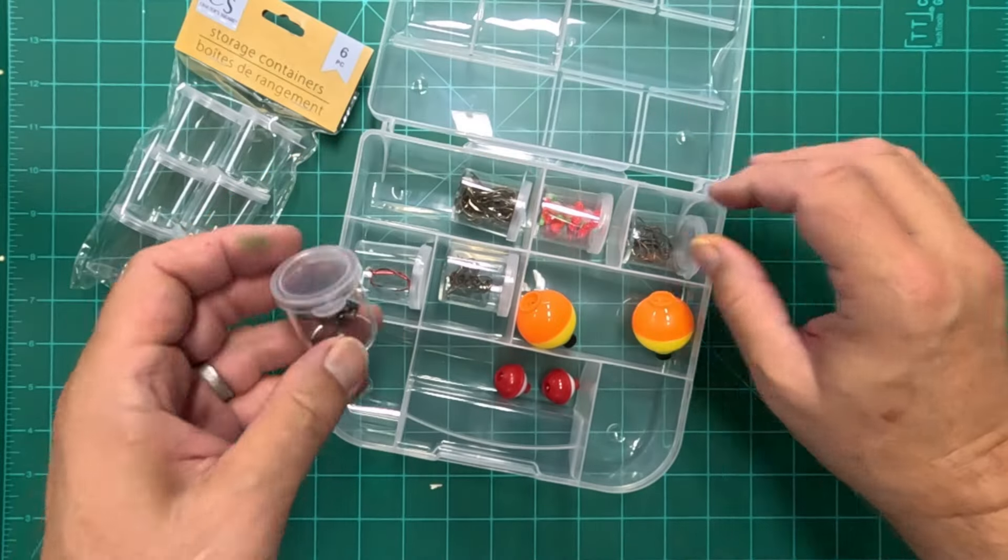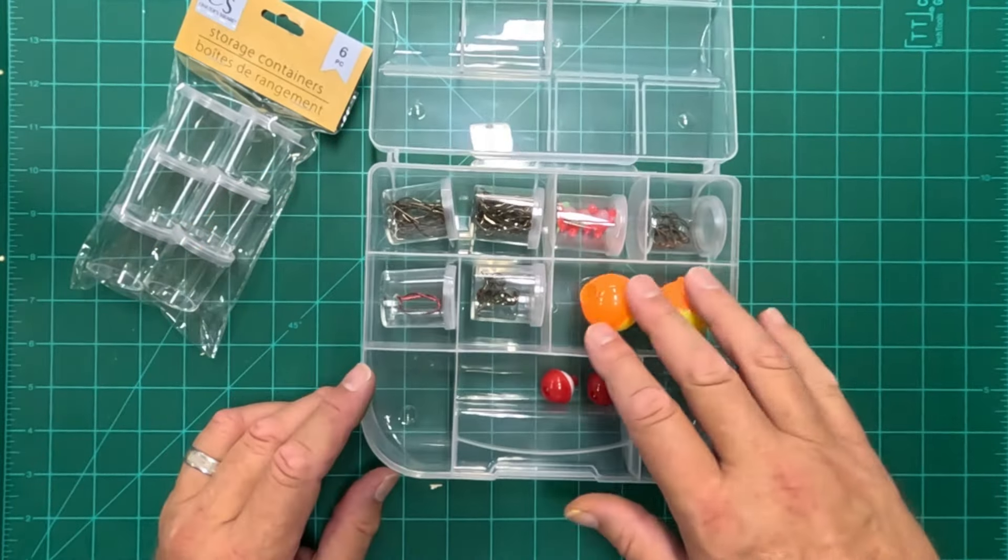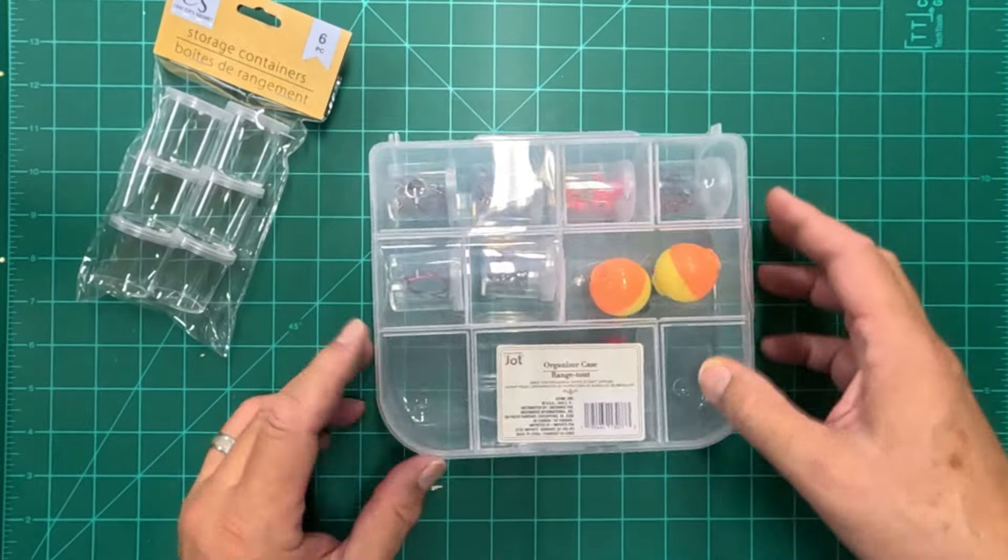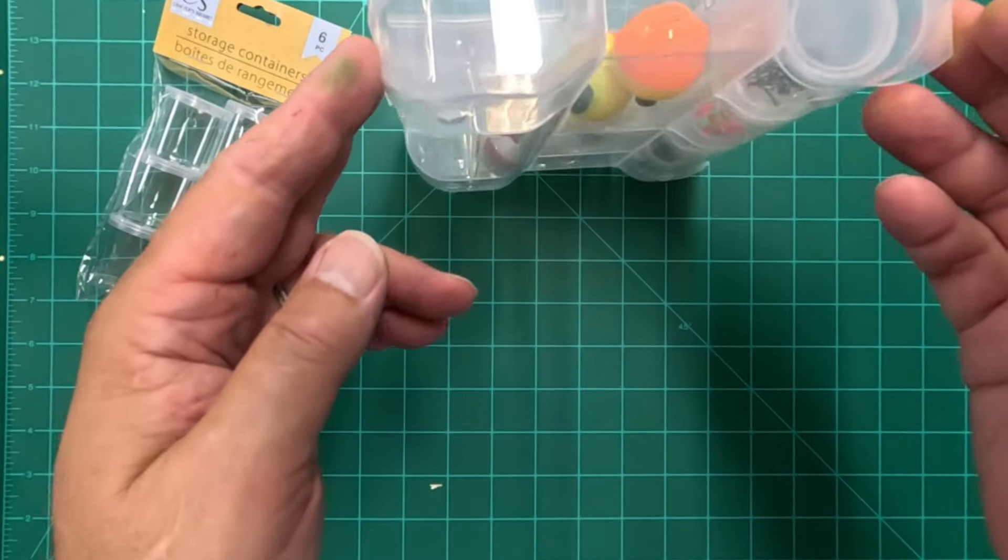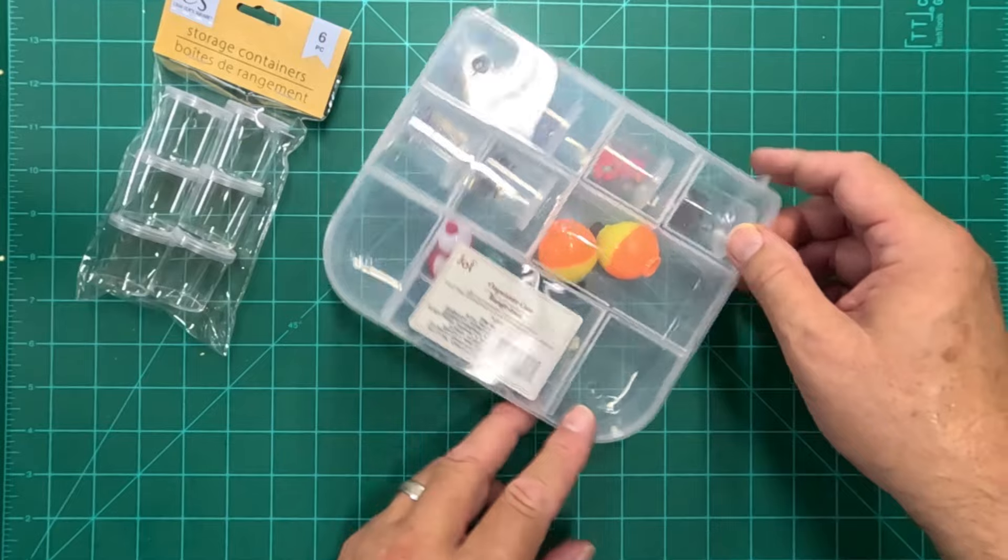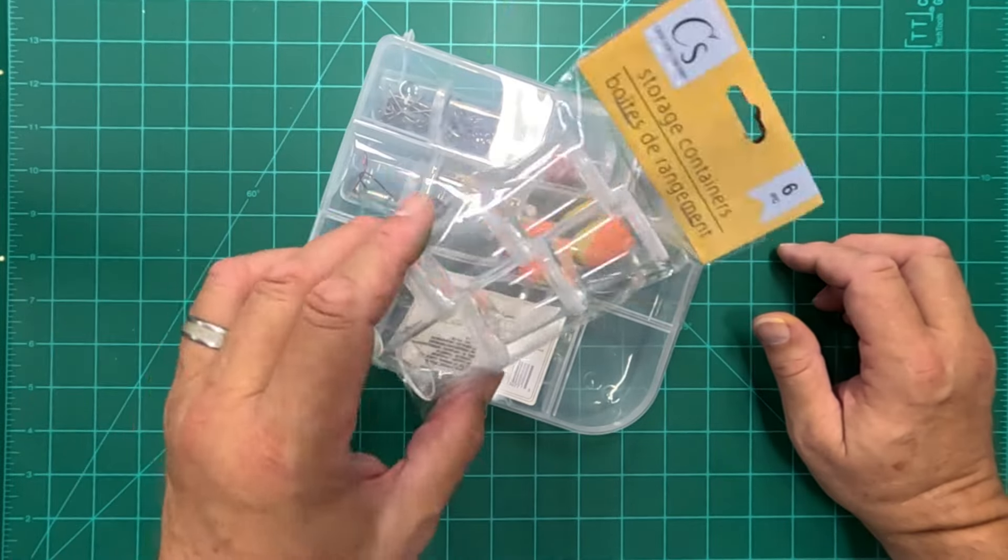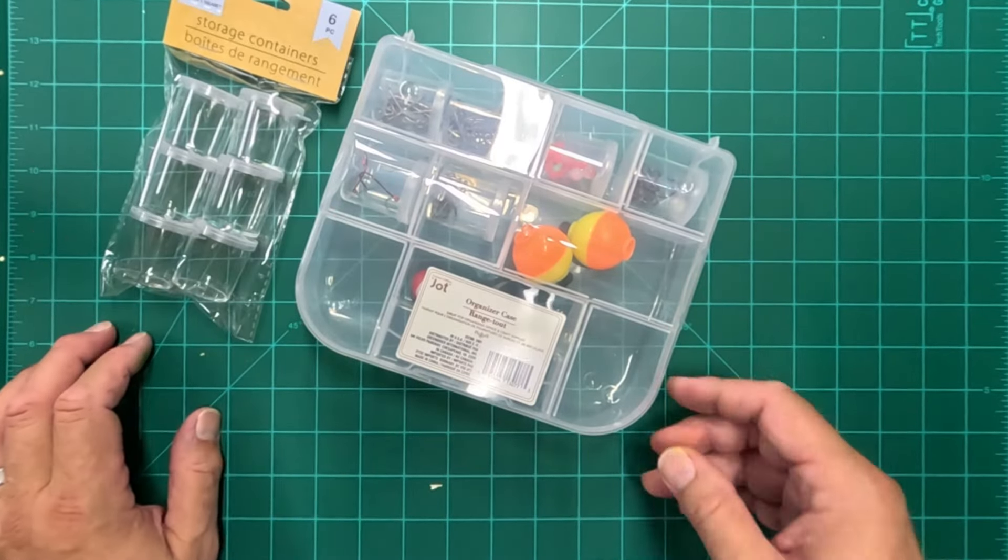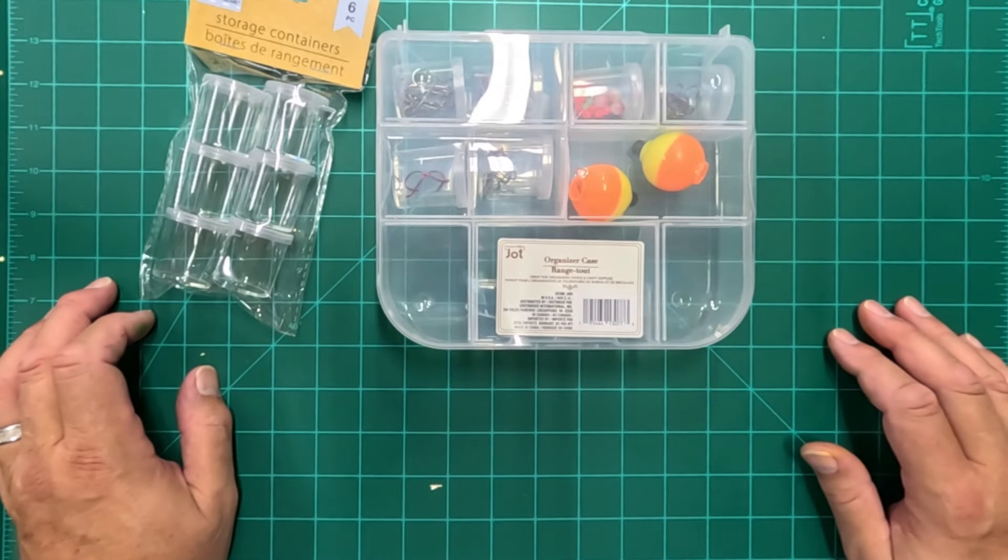Look how nicely these round storage containers fit in this case along with some other items. So you've got this nice organizer case with rounded compartments and a couple of storage containers, and that's going to go nicely in our backpack tackle box.